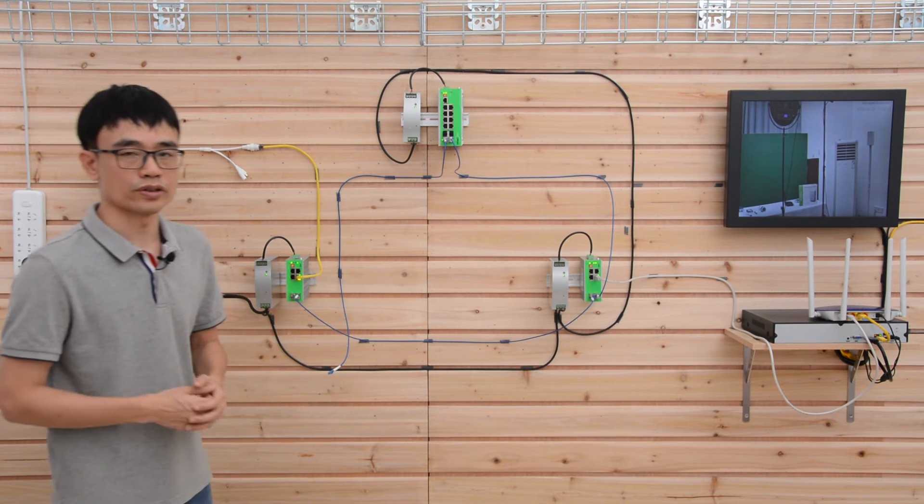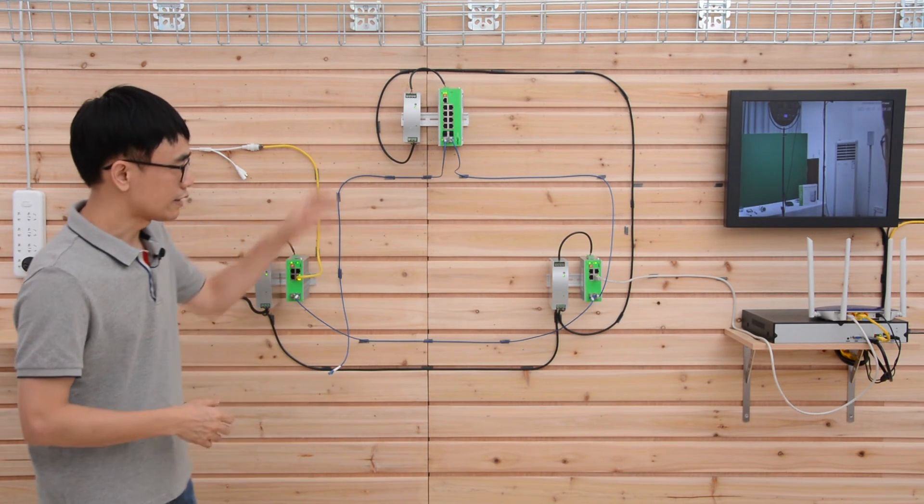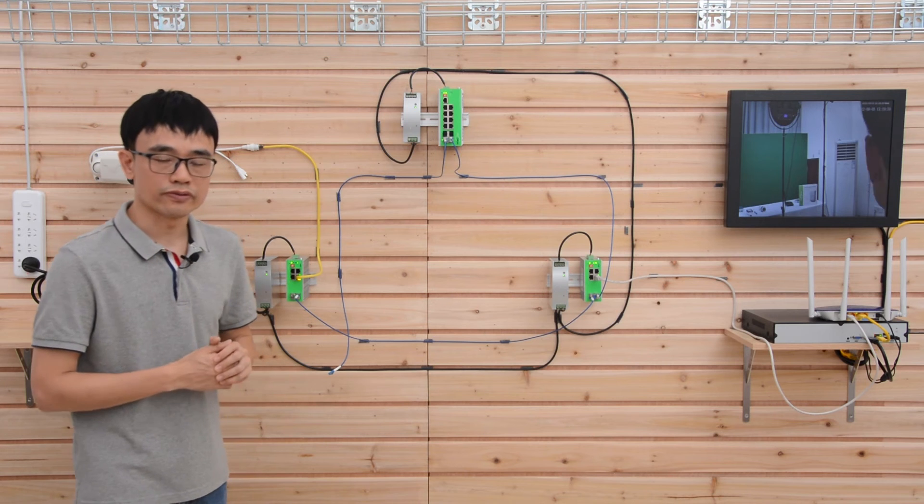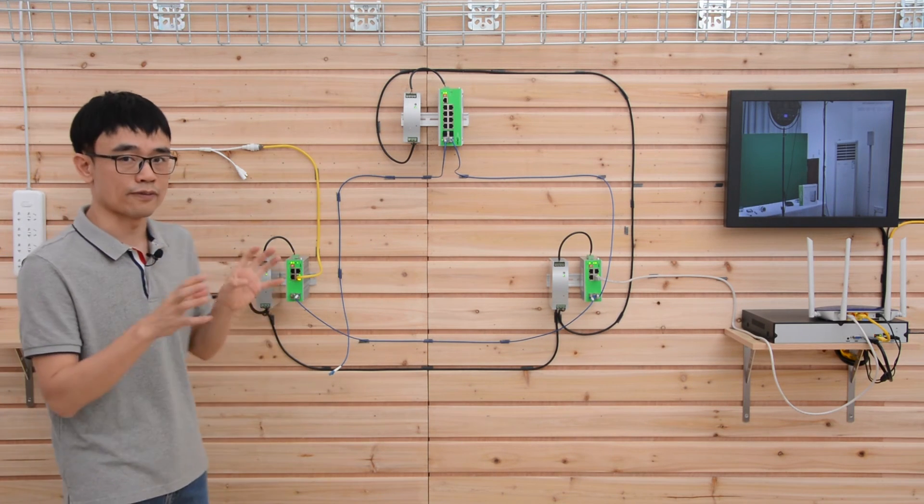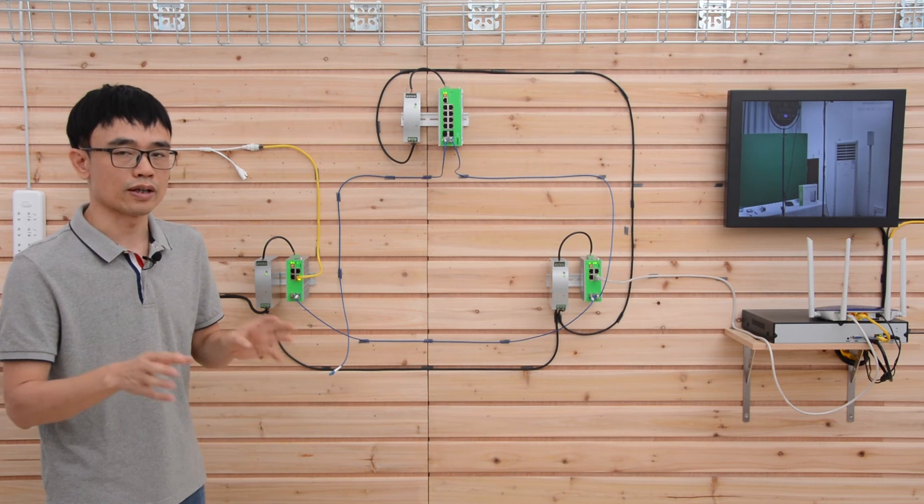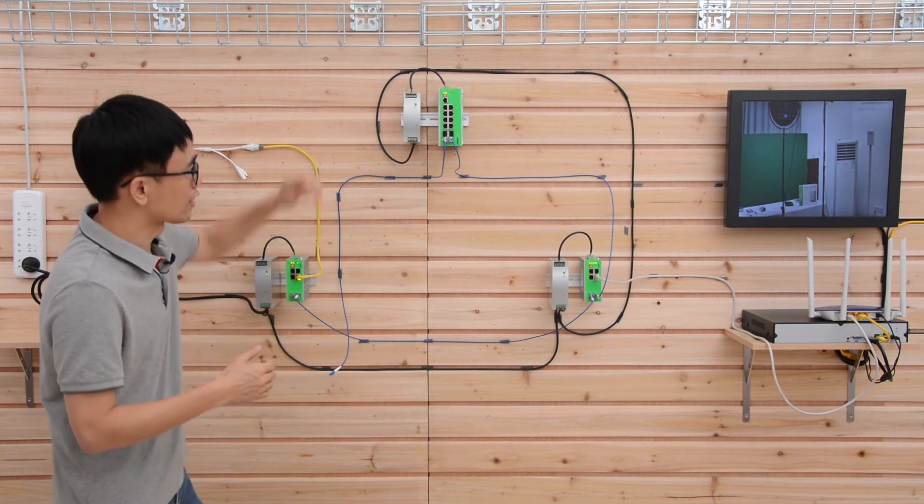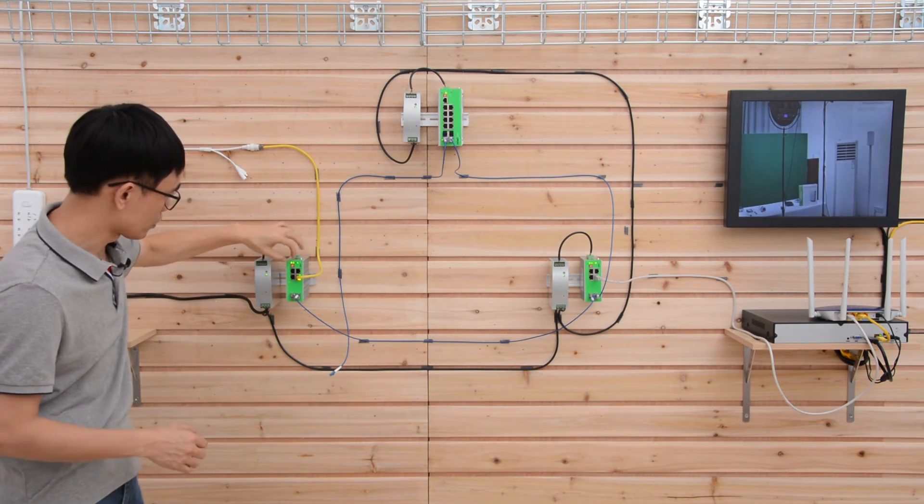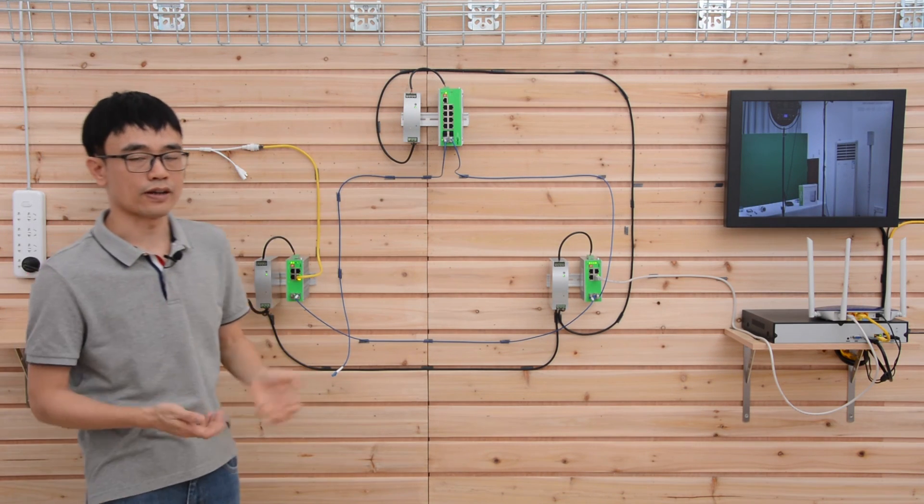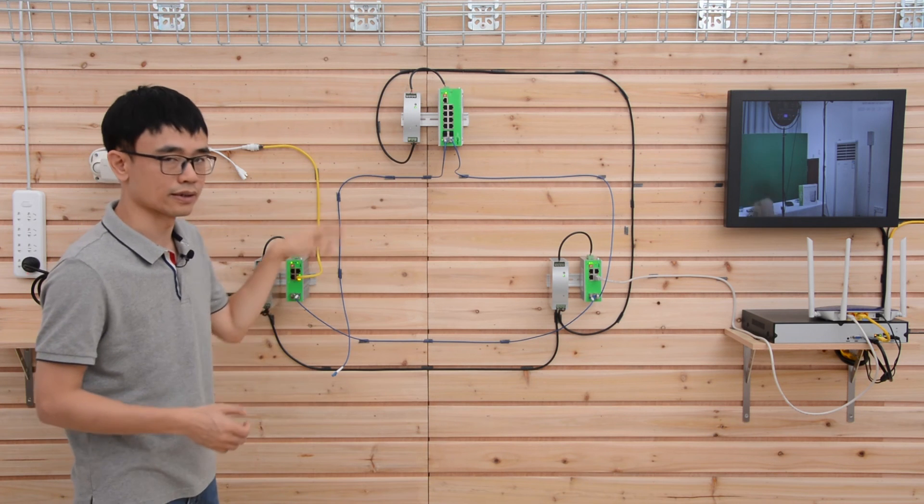But not all the switches support ERPS. These are L2 Plus managed switches. If they support ERPS, you can just log into the switch to configure which port you want to run the ERPS. Or simply you can just use this button, push on, push all the switches on, then you got the fast ring. I mean it will create the ERPS automatically.